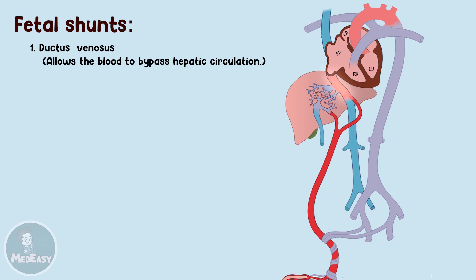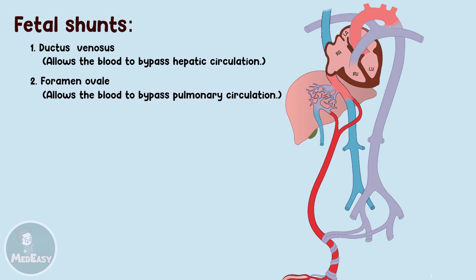Here, the oxygenated blood mixes with deoxygenated blood returning from the baby's lower limbs before it enters the right atrium. From there, the blood moves towards the foramen ovale to enter the left atrium, bypassing the pulmonary circulation. So the foramen ovale is the second shunt.